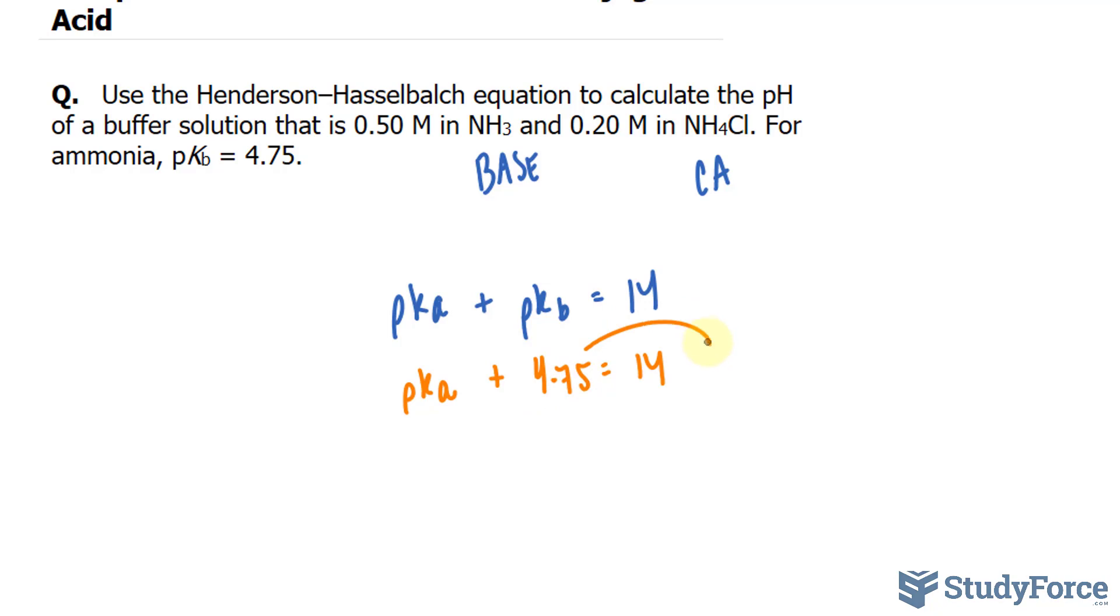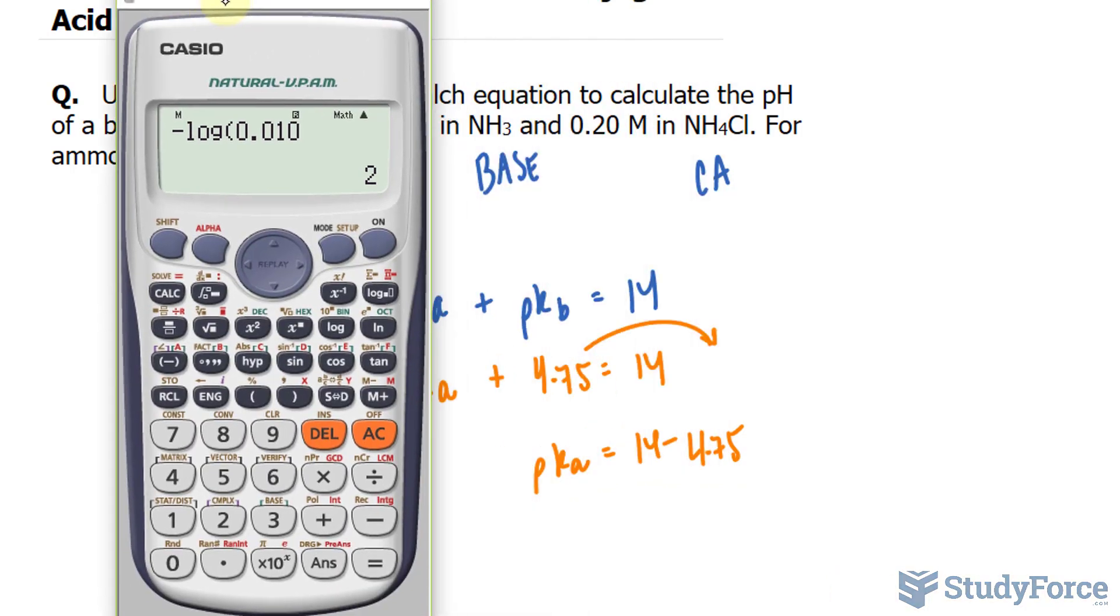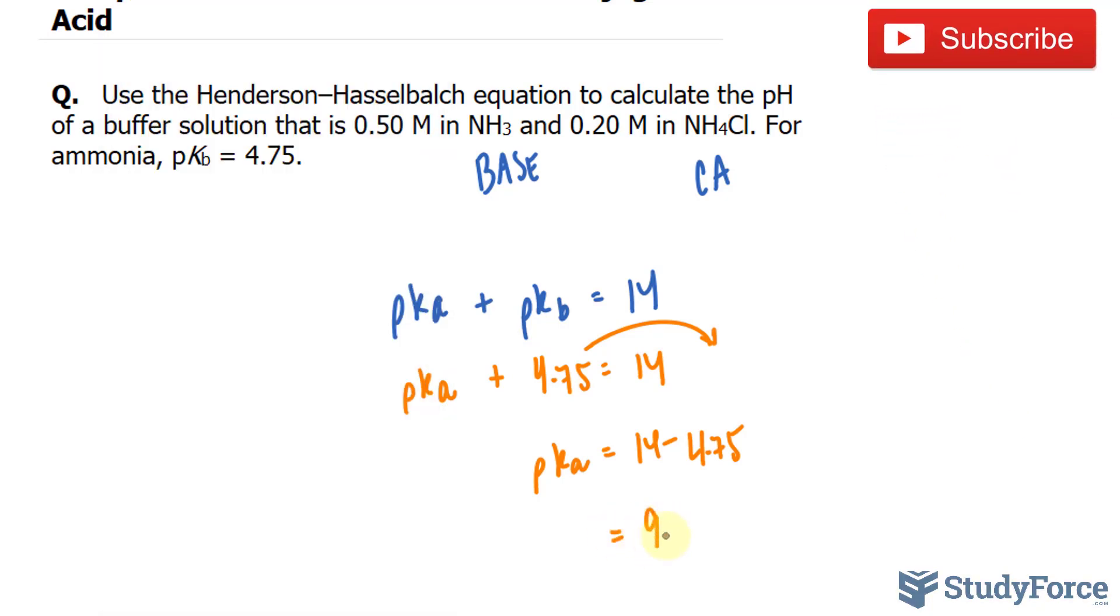Bringing this term over to this side, mathematically we end up with 14 minus 4.75 and that's pKa. Using our calculator, that should give us 9.25 pKa.